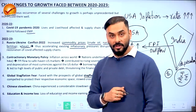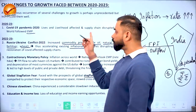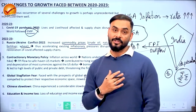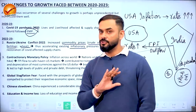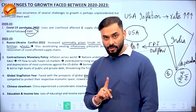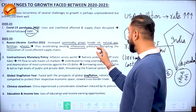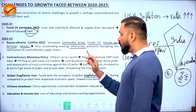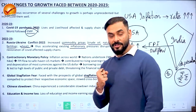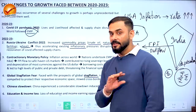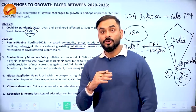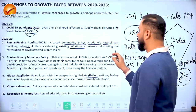During COVID, all central banks worldwide followed expansionary monetary policy — reducing interest rates and giving cash to people for treatment and survival. Then in 2022-23, the Russia-Ukraine war caused commodity prices — crude oil, natural gas, fertilizer, wheat — to become very costly. This inflationary pressure hit the economy hard, especially affecting low-income people who were already struggling.